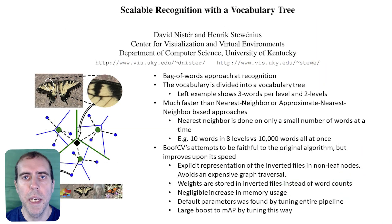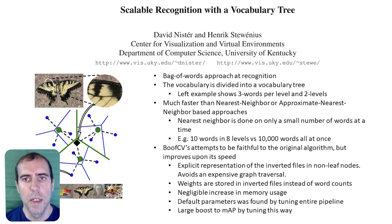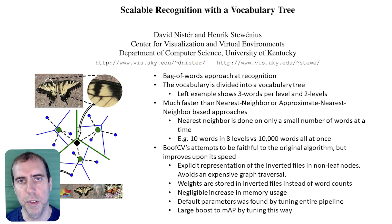BoofCV actually has two different implementations of scene recognition included. The first one is the traditional bag-of-words implementation, which uses approximate nearest neighbor to identify the relationship between words and image features.